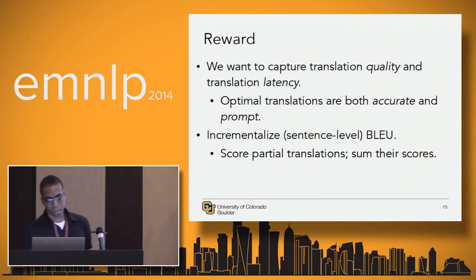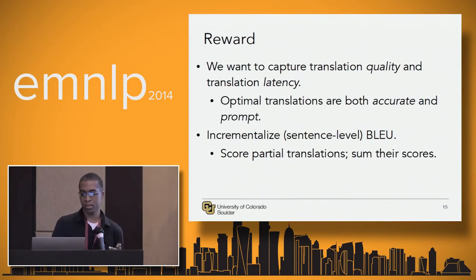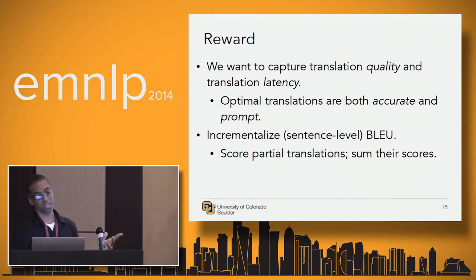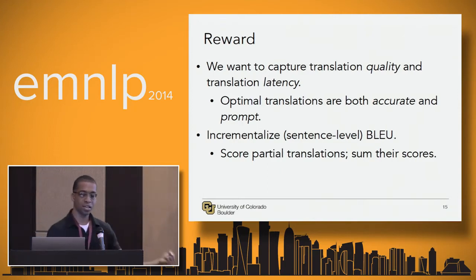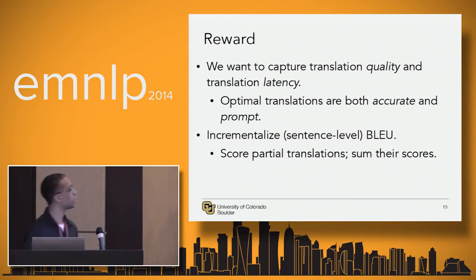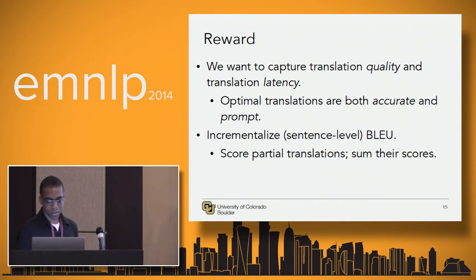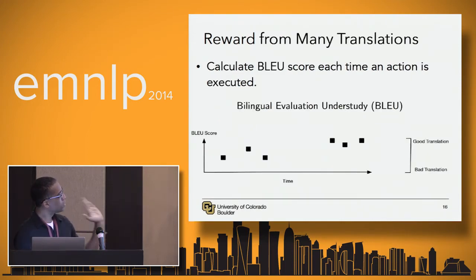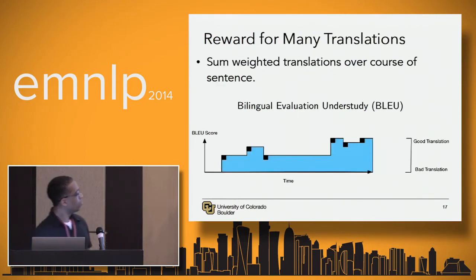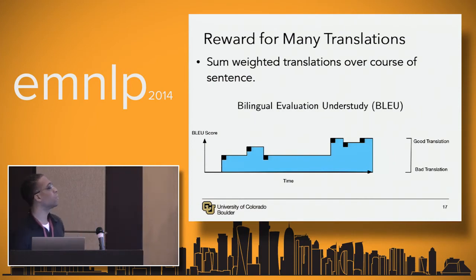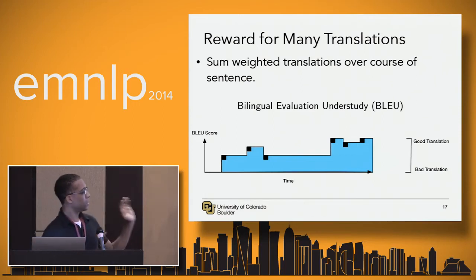In reinforcement learning, we typically have a reward. We want to optimize two things: good translations, but with low latency. We don't want translations that are terrible because we were too aggressive, and we don't want to wait until the end of the sentence. To do this, we use BLEU as a basis — it's the standard metric for many languages. We calculate BLEU for each segment we commit to, and we take a discrete integral of these scores to get our score for the entire sentence.